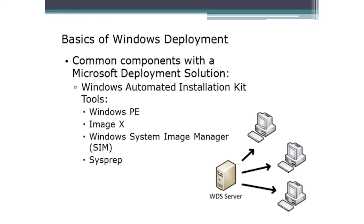There's also the Windows System Image Manager (Windows SIM). SIM is important because automation means you don't want to be involved in answering questions — but those questions still have to be answered: what's the computer name, what's the initial password, what domain is it part of, what network information should it have, static IP or DHCP? Windows SIM helps answer those questions by creating an answer file so that when you deploy the image and it boots up, it can answer its own questions from that file.